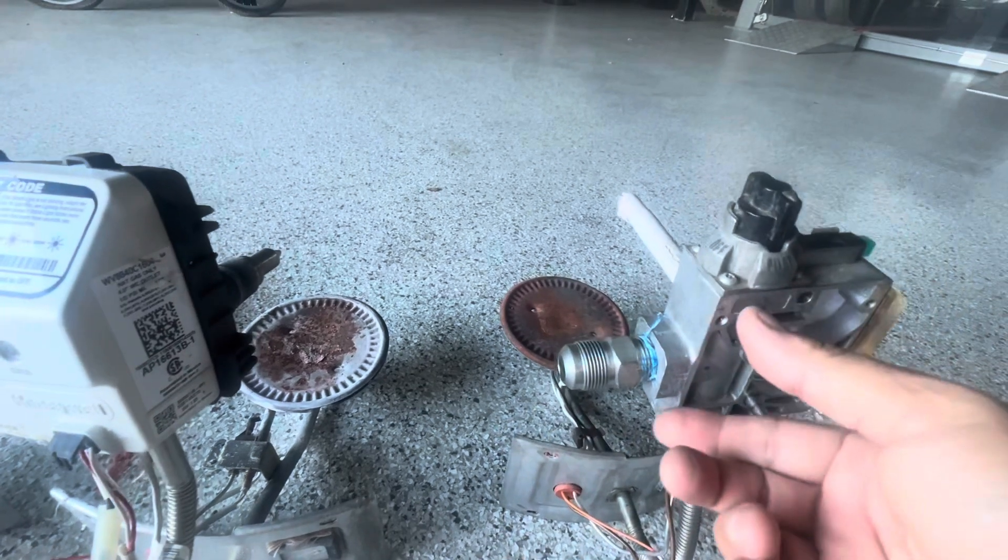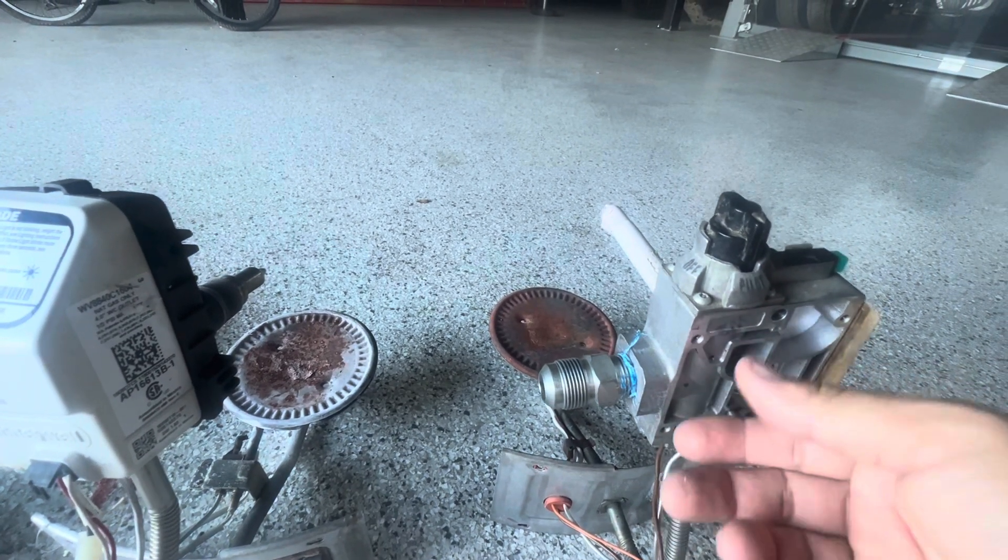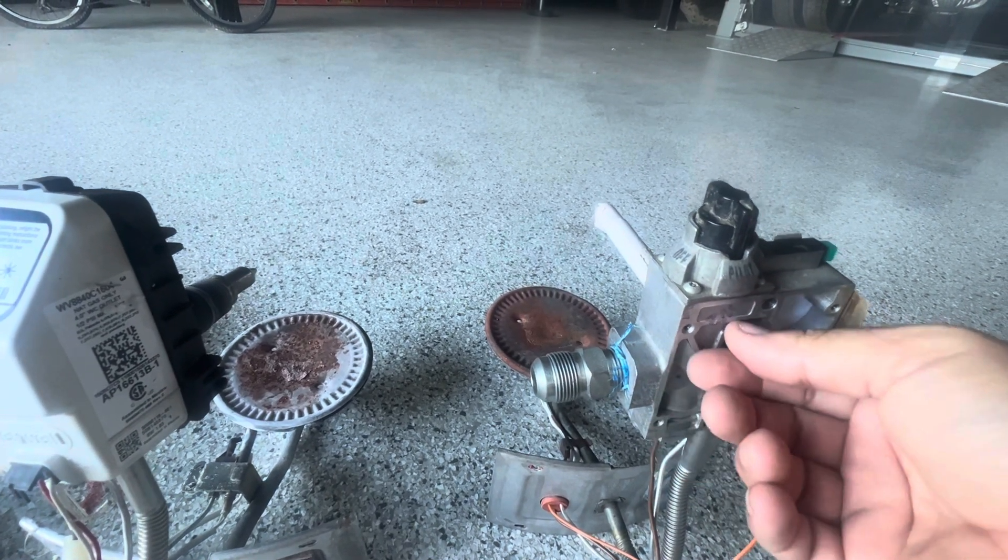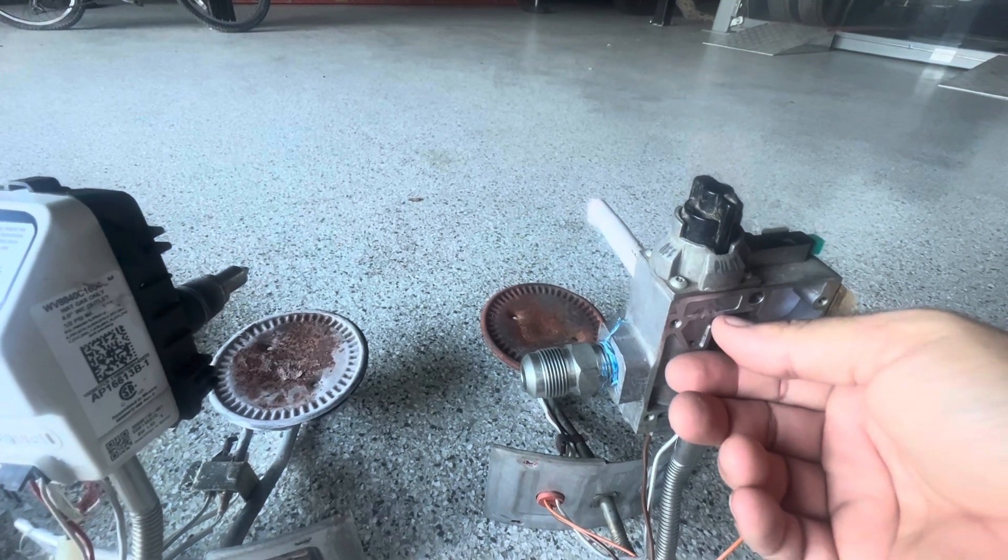Once that's extinguished, the millivolts will drop. So at about five millivolts, that mag assembly will drop back to the closed position and shut all the gas off.